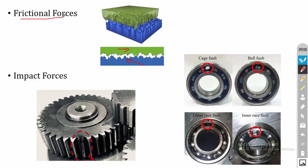The next internal force is impact forces — forces applied for a short duration. Consider a gear where a single tooth is broken. If this tooth is broken, during meshing the gear will not properly mesh with the mating gear. Whenever this gear comes into contact, it will create an impact force. The next tooth will try to apply force on the mating gear, and that impact force will create vibration in the gear.